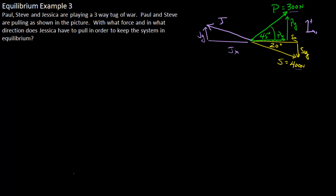Now we can figure out what Paul and Steve's components are. So Paul's x component is going to be 300 times the cosine of 45 degrees, and this is going to equal 212 newtons. His y, since the angle is 45 degrees, is going to be exactly the same, 212 newtons.